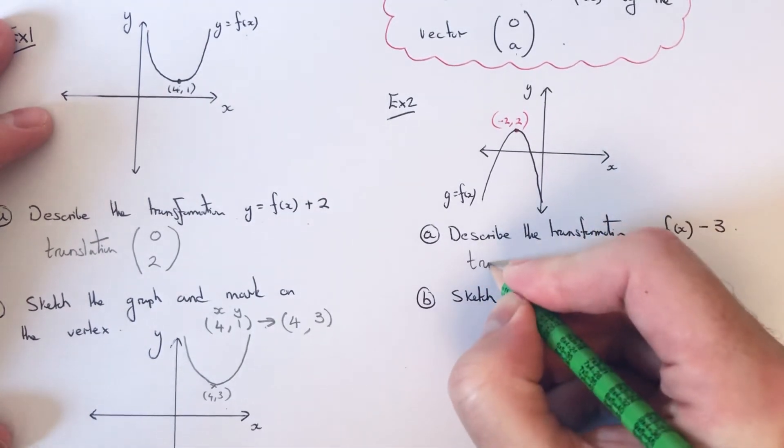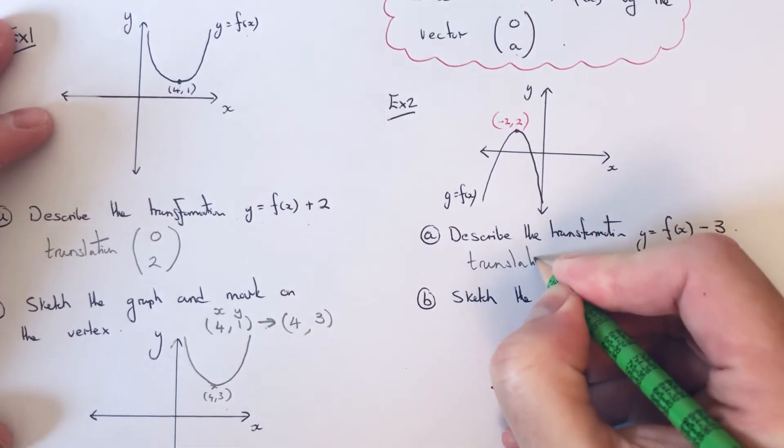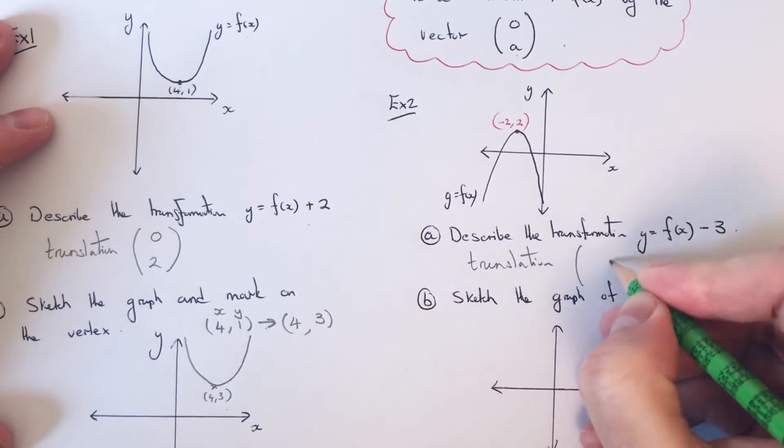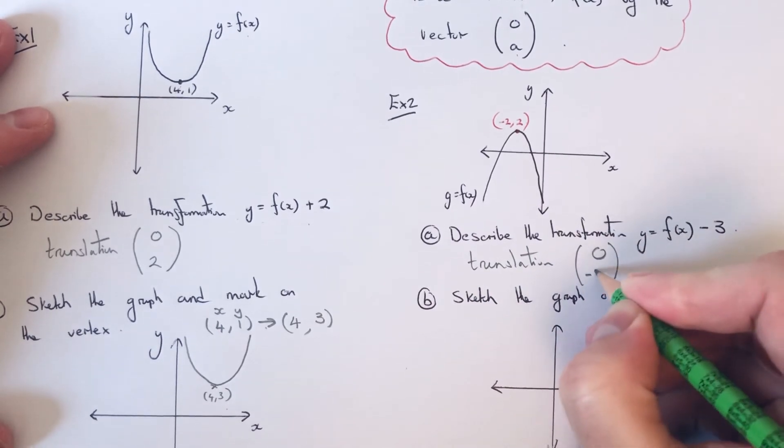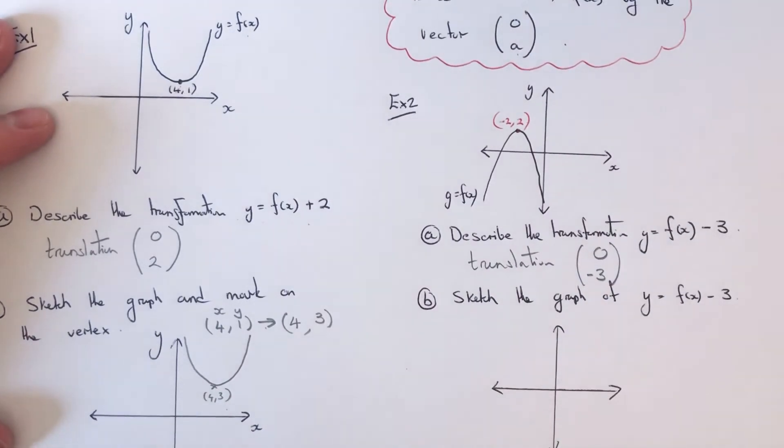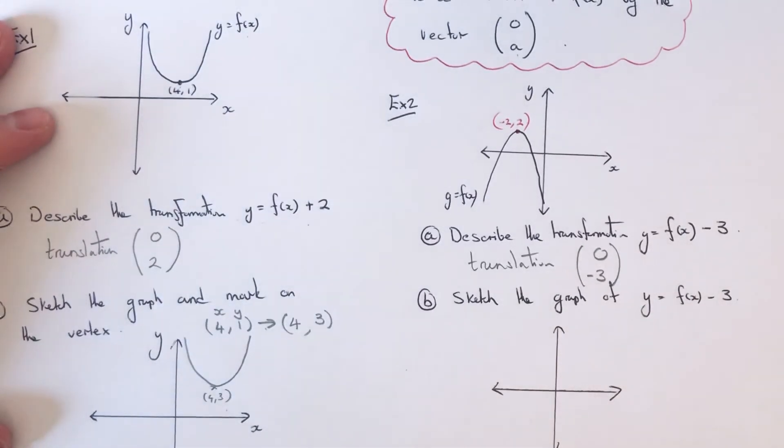So this time, again, it would be a translation. And the vector this time would be 0, minus 3, which basically means I'm moving the graph 3 units down.